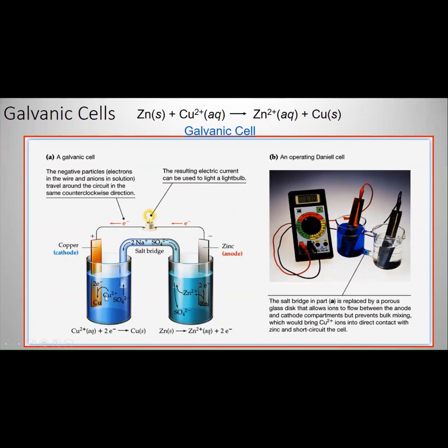At the cathode, you are consuming the copper 2+ because the copper 2+ converts to copper. So what do you have? Excess sulfate. You have excess sulfate at the cathode.